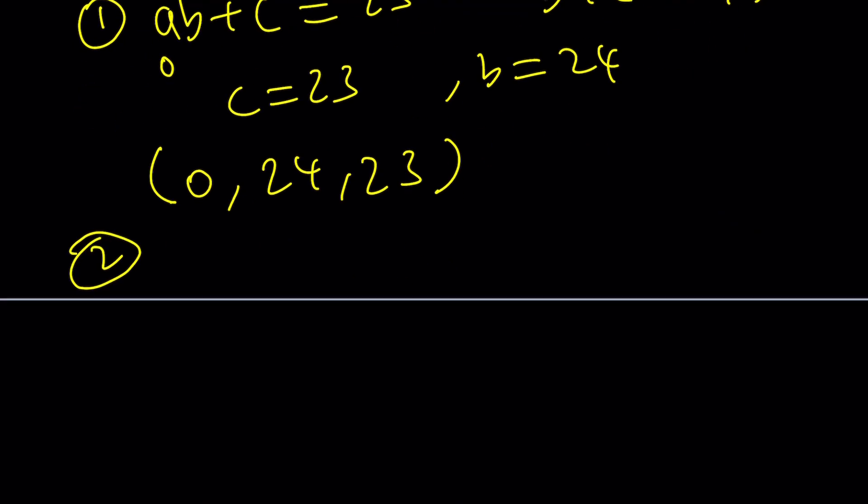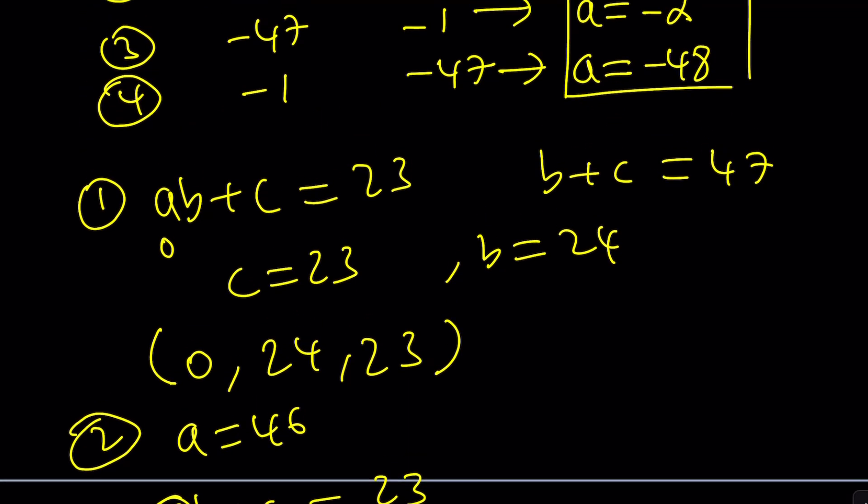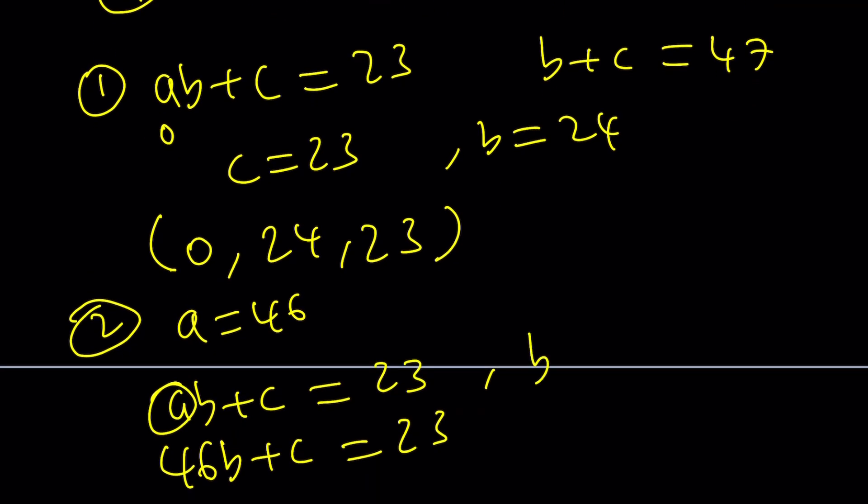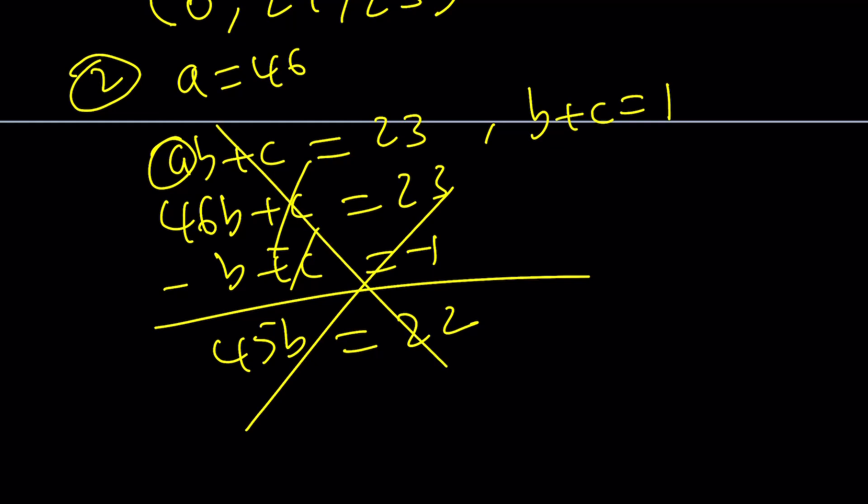Now let's go ahead and take a look at case two. A is 46. And I know that AB plus C is 23. Let's go ahead and replace A with 46. We get 46B plus C is 23. Along with B plus C, which is in the second case, B plus C is one. So now we get B plus C equals one. If you negate the second equation and add, which is subtraction, C is going to cancel out, 45B equals 22. B is not going to be an integer. So we don't get any solutions from there.